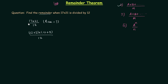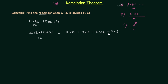I have broken 17 as 12 plus 5 because 12 is the number by which we have to divide the numerator. Similarly I have broken 21 as 12 plus 9 because 12 is the divisor. Now I will expand these two brackets. It gives 12 multiplied by 12, plus 12 multiplied by 9, plus 5 multiplied by 12, plus 5 multiplied by 9, all divided by 12.